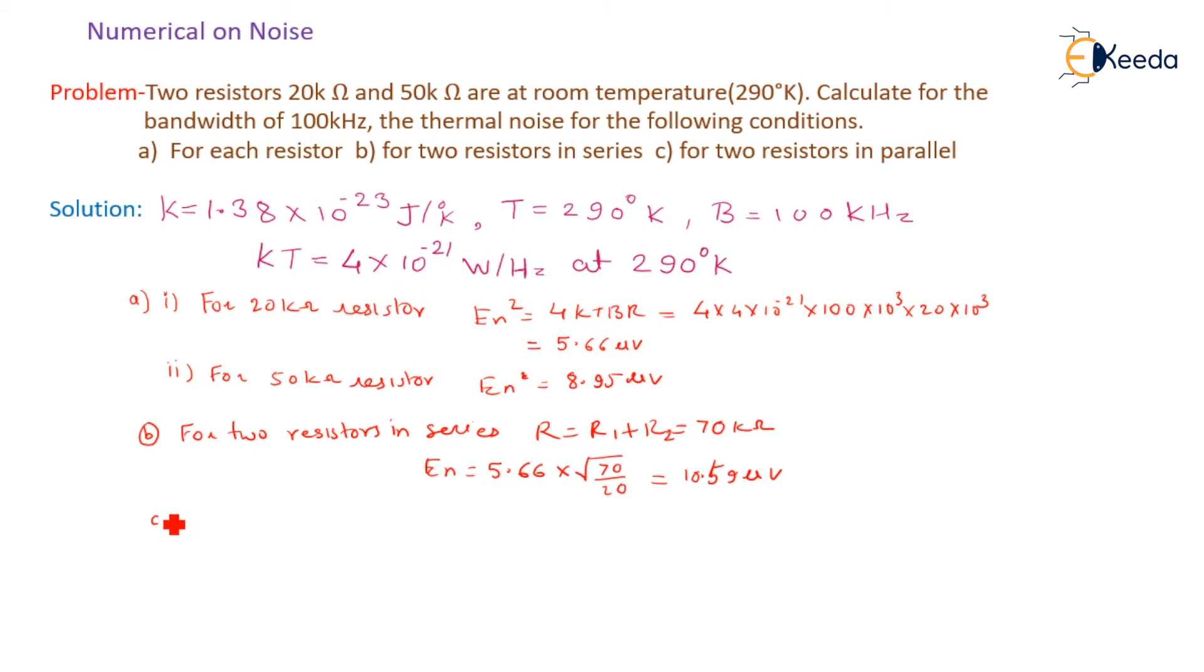Now the third case C for two resistors in parallel. For two resistors in parallel, we need to calculate the equivalent resistance Rp equal to R1 and R2 combination in parallel, that is 20 × 50 divided by 20 plus 50. And that value is equal to 100 by 7 kΩ. Now putting the value into the formula of En, En can be evaluated as 5.66 into under root of 100 divided by 20 into 7. So finally the En will be calculated as 4.78 microvolts.